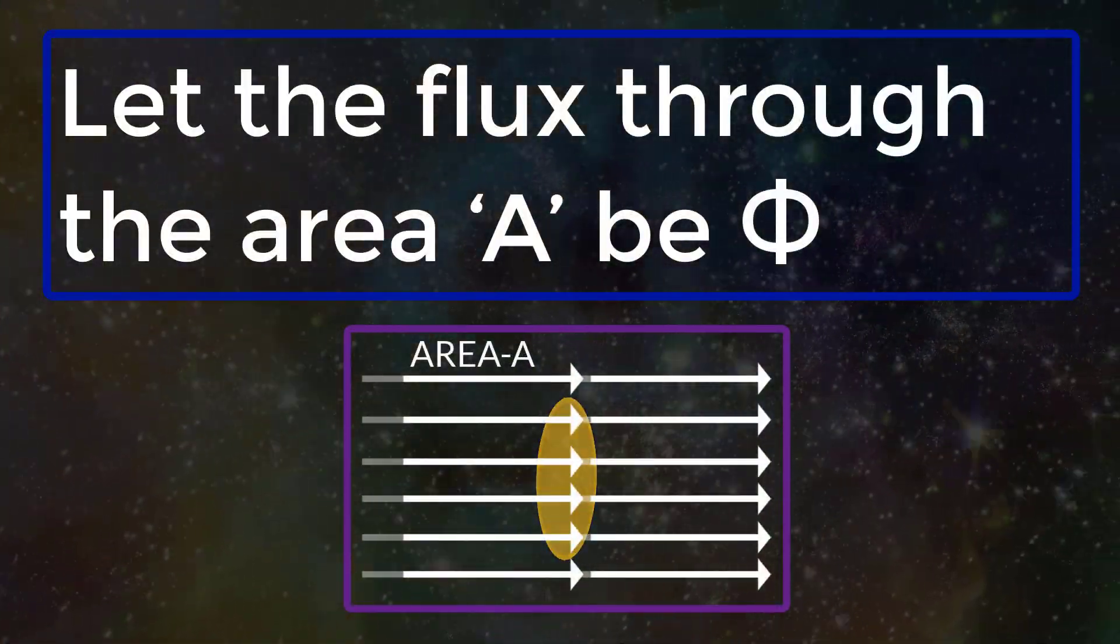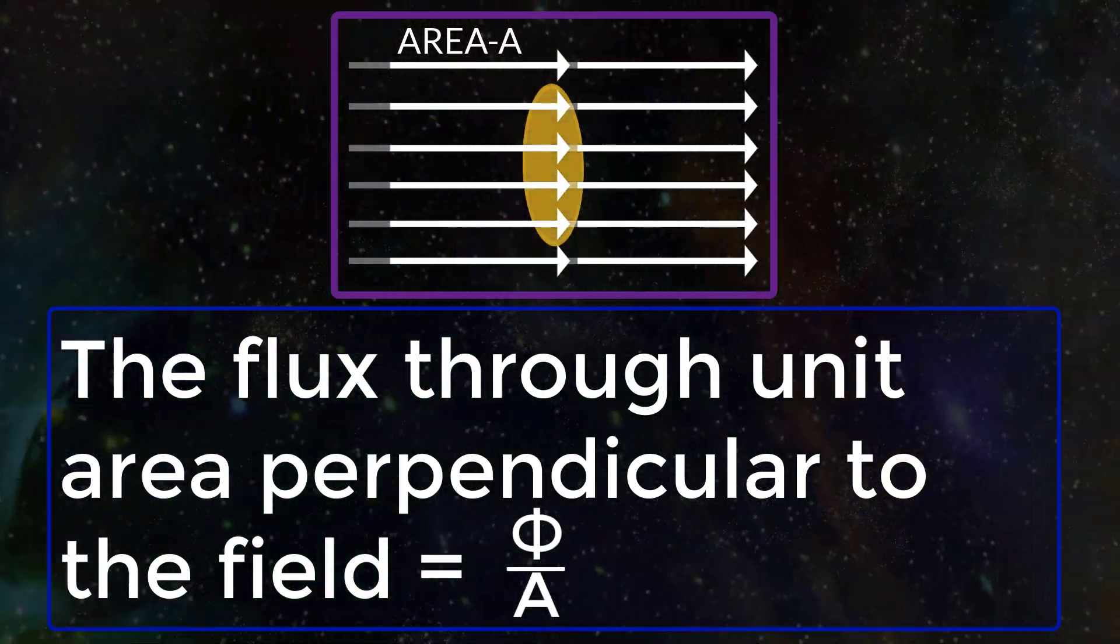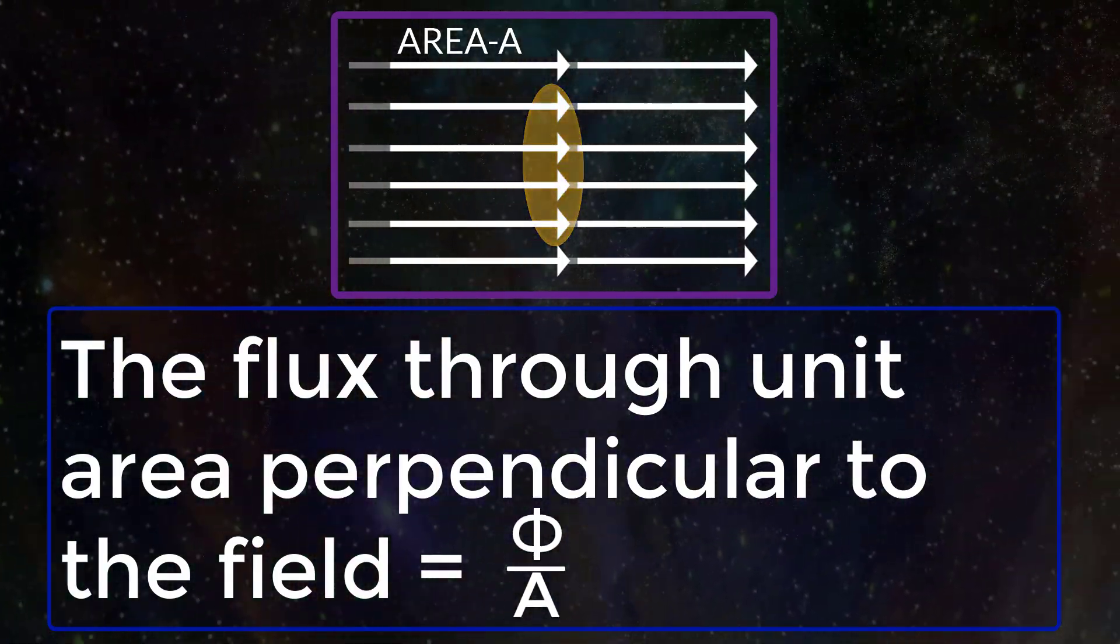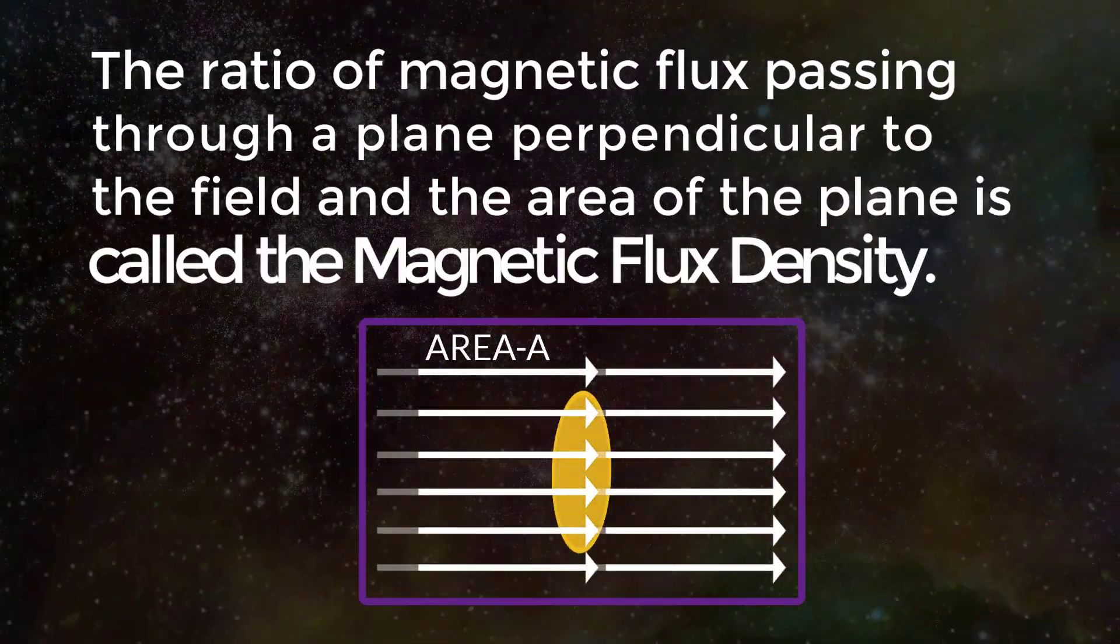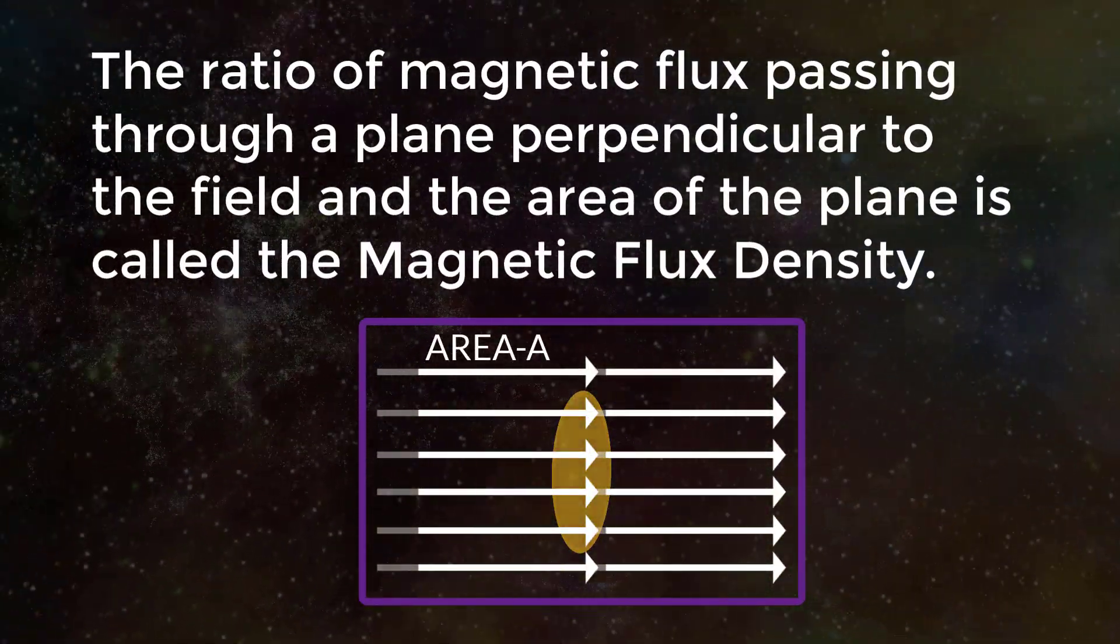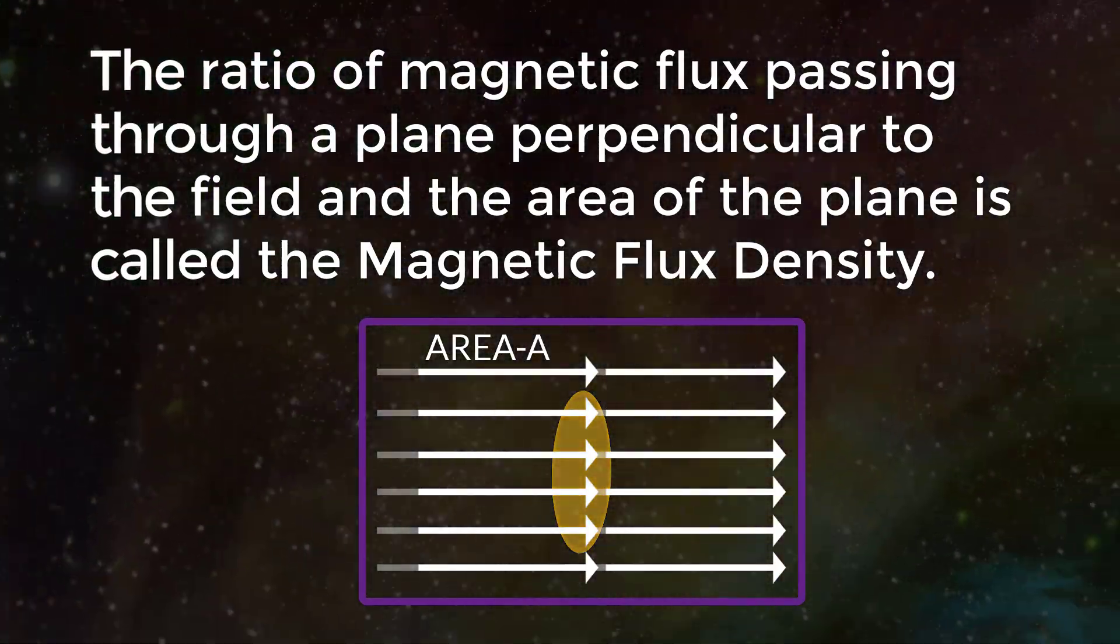Let the flux through the area A be phi. The flux through unit area perpendicular to the field is equal to phi by A. The ratio of magnetic field passing through a plane perpendicular to the field and the area of the plane is called the magnetic flux density.